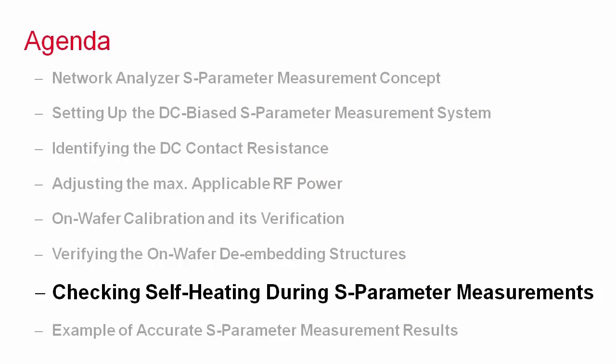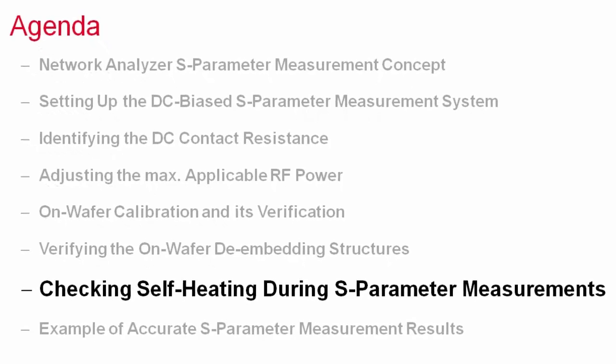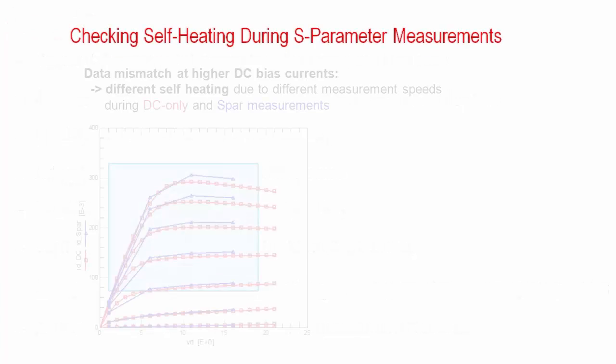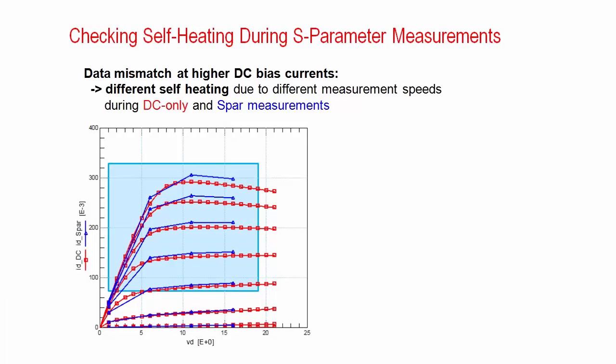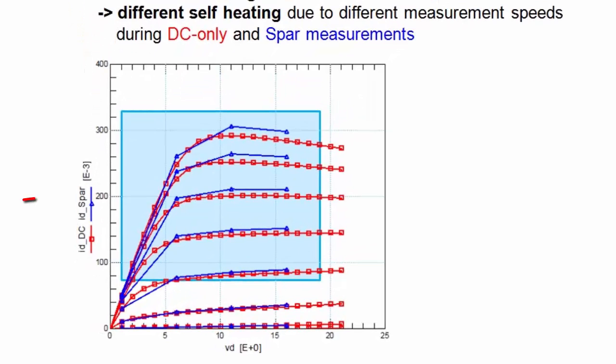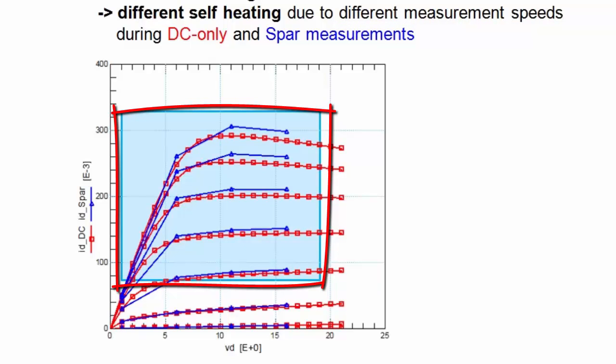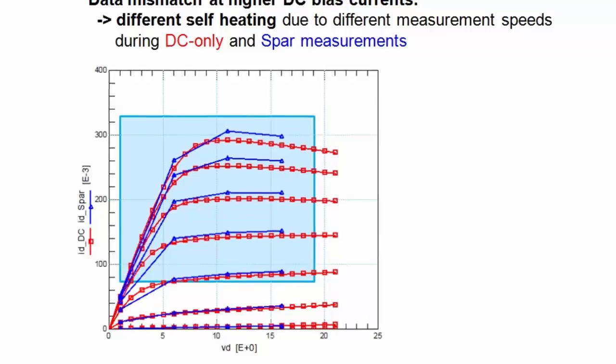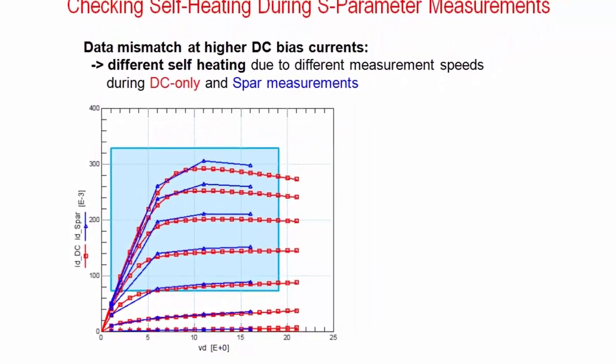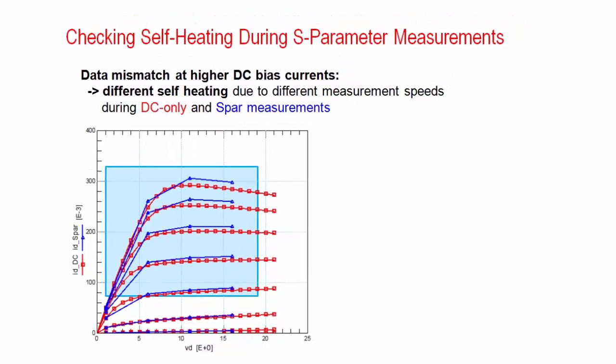With these prerequisites of calibrated measurements and verified de-embedding fulfilled, we finally need to make sure that the device does not change temperature during the time-consuming S-parameter measurements. This plot, obtained also by using the IC-CAP file in the downloads, overlays the drain bias currents of a MOS transistor S-parameter measurements in blue with the DC-only IDVD traces in red. Because of the fast DC-only and the slower DC-biased S-parameter measurement speed, device self-heating can occur at higher bias levels and lead to different drain current values. This means that a model fitting well the DC modeling domain will not and cannot fit the S-parameter curves. The measurements have to be repeated with ensured identical thermal conditions for both DC and S-parameters.